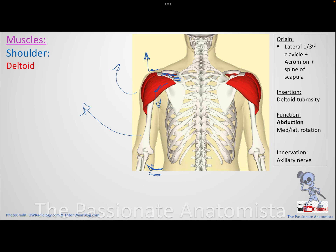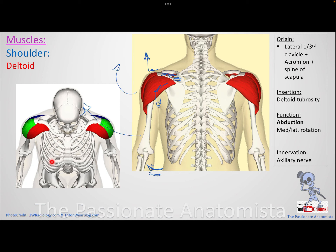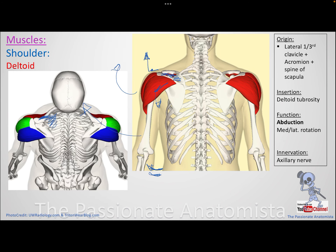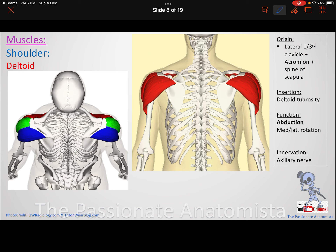The nerve supply of the deltoid is the axillary nerve. Looking at the deltoid, it comes from the lateral third of the clavicle, from the outer border of the acromion process, and from the spine of the scapula - the same bones that receive the insertion of the trapezius muscle from the internal side. From the posterior aspect, you can see the spine of the scapula, the acromion process, and the clavicle, with the anterior, middle, and posterior fibers of the deltoid.